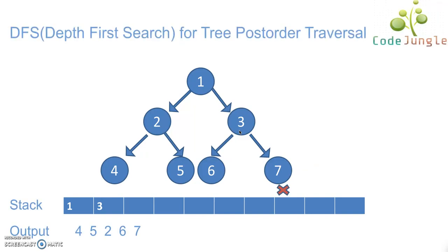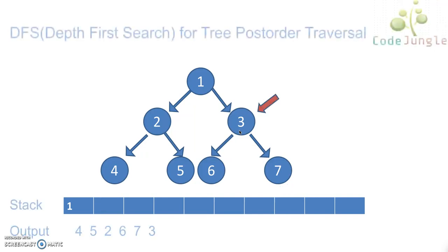As there are no child nodes for seven, seven has been popped out of the stack and accumulated in the output. Now because we have left node six in the output and right node seven in the output, it is time to go for the root node. So we go for three, pop it out of the stack and put it into the output. Now the next element in the stack is one. For one we already have the left element and the right element in the output, hence we put one into the output and pop it out of the stack.